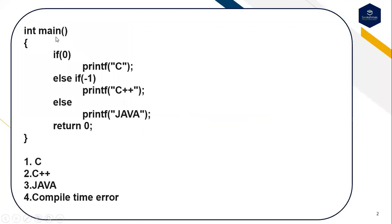This is the first question: int main, if(0) then print 'C', else if(-1) print 'C++', else print 'Java'. Predict the output of this code. The options are: first option C, second option C++, third option Java, fourth option compile time error. You can pause this video and predict the output.